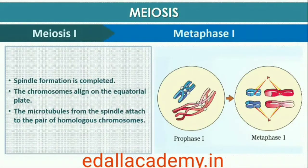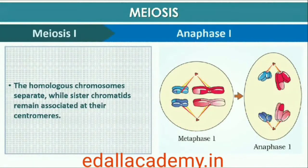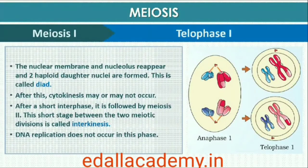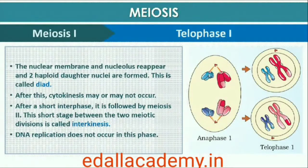At Metaphase I, the bivalent chromosomes align on the equatorial plate and microtubules from the opposite poles of the spindle attach to the pair of homologous chromosomes. At Anaphase I, the homologous chromosomes separate while sister chromatids remain associated at their centromeres. At Telophase I, the nuclear membrane and nucleolus reappear; cytokinesis follows and this is called dyad of cells. Although in many cases the chromosomes undergo some dispersion, they do not reach the extremely extended state of the interphase nucleus. The stage between the two meiotic divisions is called interkinesis and is generally short-lived.